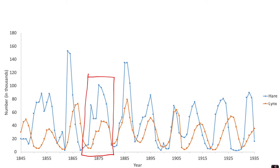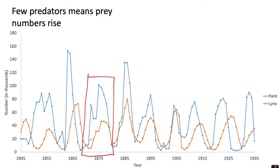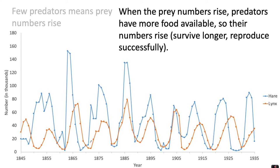You'll notice that few predators mean the prey numbers rise. So when the lynx — the orange line here — is very low, these prey numbers start to rise really rapidly. And then when the prey numbers rise in this section here, shortly afterwards the number of predators also rises, because when the prey numbers rise the predators have more food available.